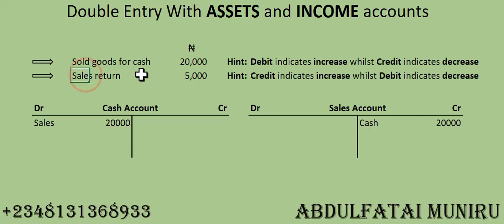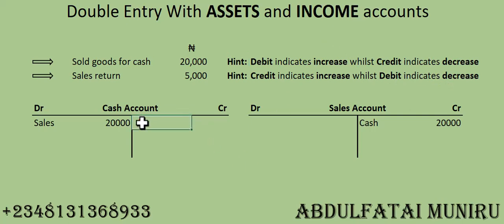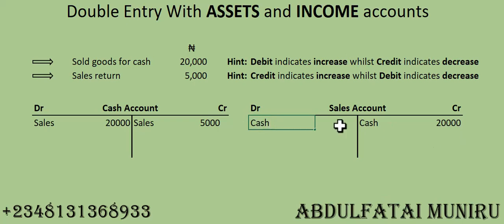The sales return was made in cash, so the cash account is decreasing. A credit indicates decrease to an asset account, while a debit indicates decrease to an income account. So we post Sales at 5,000 Naira on the debit side of the income account, and Cash at 5,000 Naira on the credit side of the asset account.